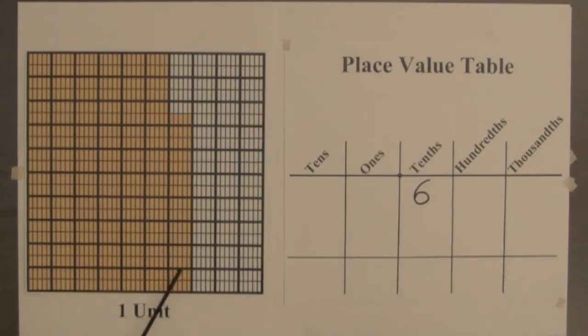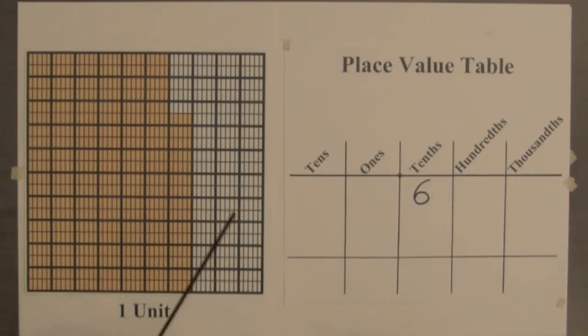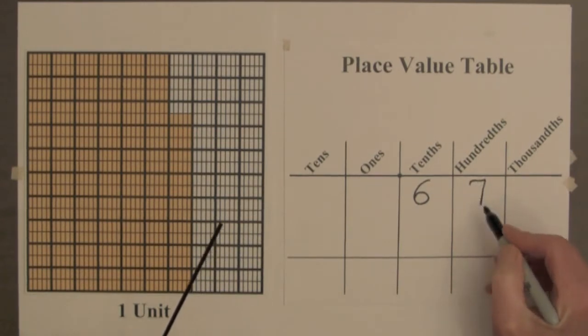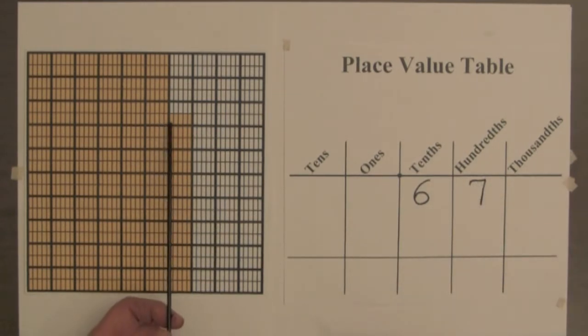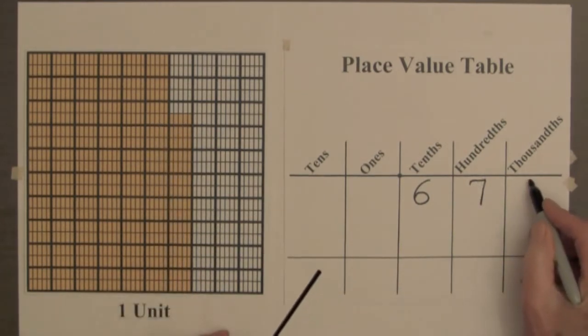There are six, seven hundredths, and five tiny thousandths.